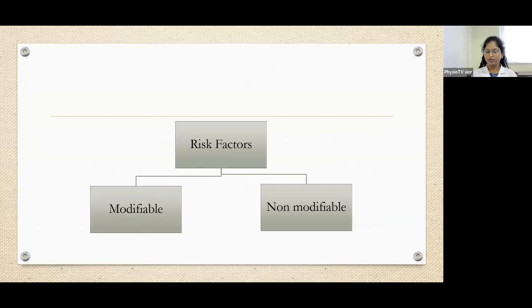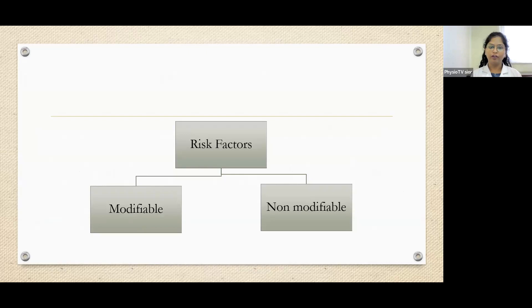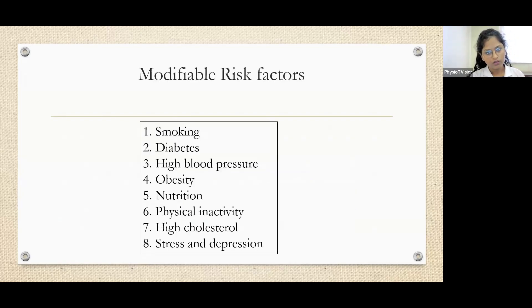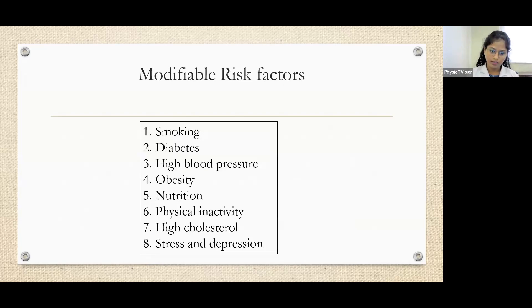There are two types of risk factors. Some are modifiable — meaning we can change them. Some are non-modifiable — we cannot change them. Modifiable risk factors include smoking, diabetes, high blood pressure, obesity, nutrition, physical inactivity, high cholesterol, stress, and depression.